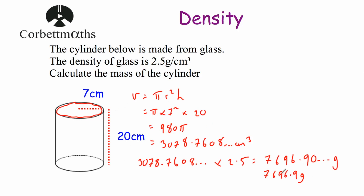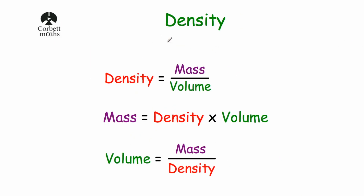We could also write that mass in kilograms. To convert from grams to kilograms we divide by 1000, which gives us 7.6969 kilograms. So that's the mass of the cylinder in kilograms. In this video we've looked at density and used our knowledge of it to answer questions. It's useful to know that density equals mass divided by volume, and to be able to rearrange that formula to find the other quantities.